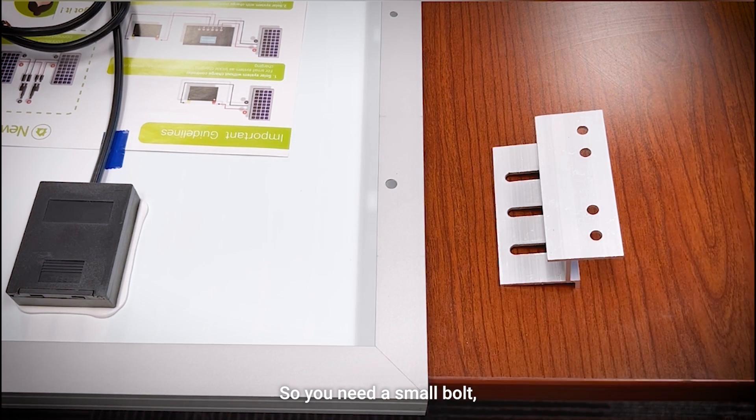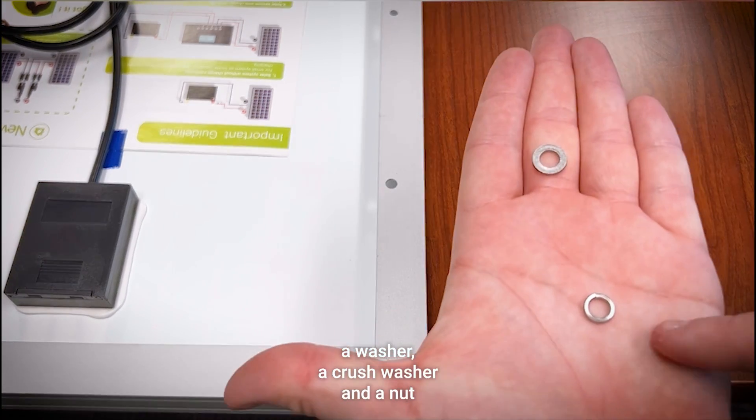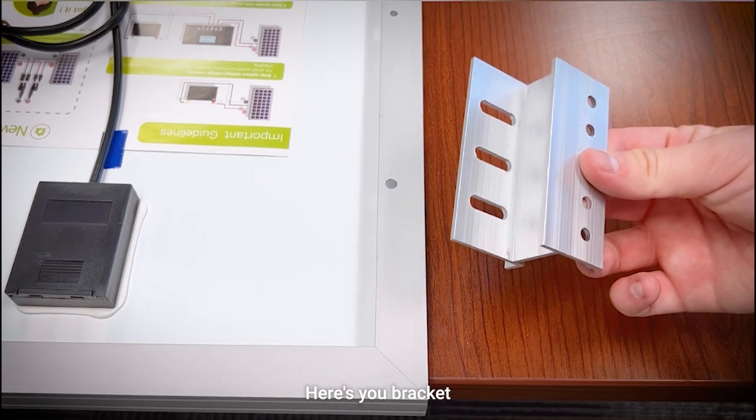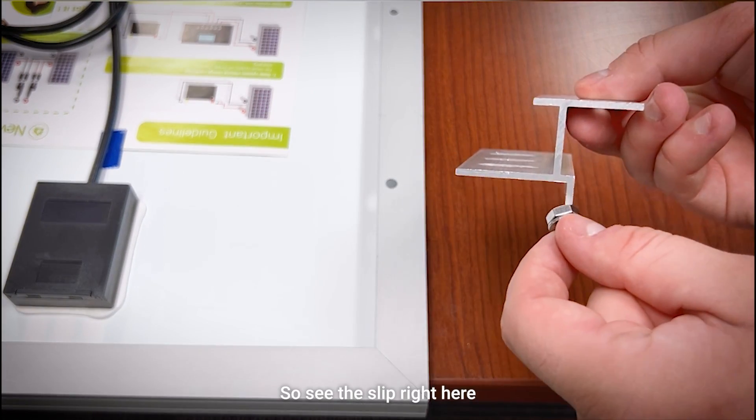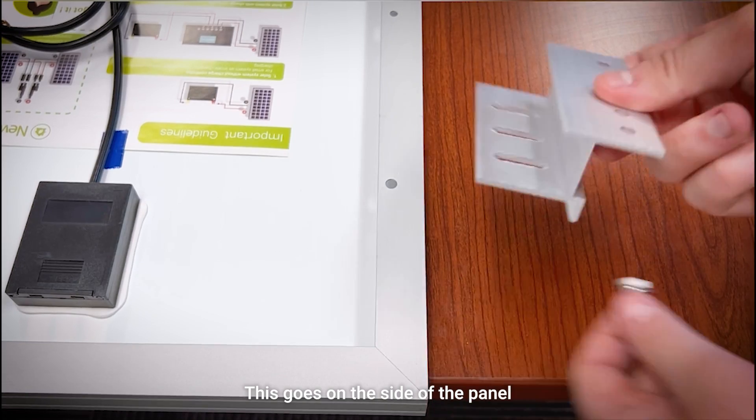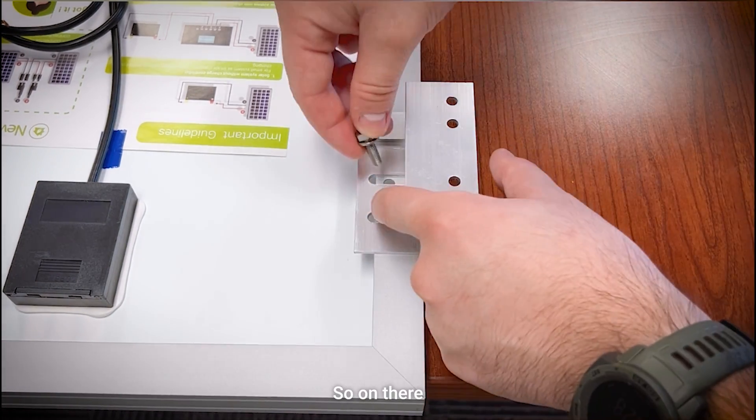You need this bolt right here. Everything I'm about to show you comes with your bracket. So you need a small bolt, a washer, a crush washer, and a nut. Take your bracket and put it on. See this lip right here? This goes on the side of the panel, like so, just like that. It's on there.